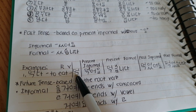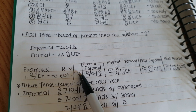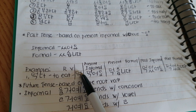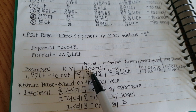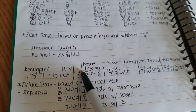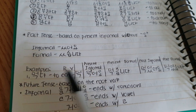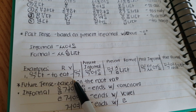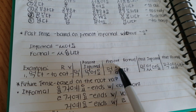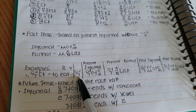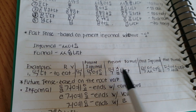The root verb of 'mokta' is 'mok'. Since it ends with a consonant 'kiyok' and has the vowel 'u', the present informal is 'mog-eoyo'. The present formal is 'mok-sumnida'.